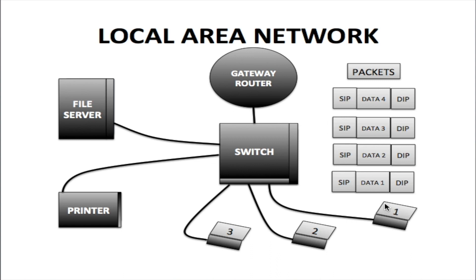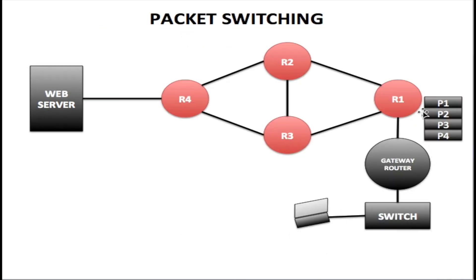Each chunk of data is placed into one of the four packets: one chunk in packet one, another in packet two, three, and four. Each packet has the same source IP address — the IP address of the sending computer — and the same destination IP address of the server being reached. These packets are then sent from the computer through the switch, through the gateway router, and onto the internet, arriving at router R1.